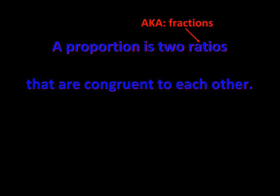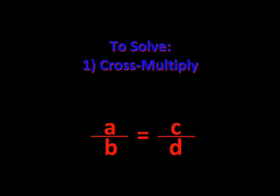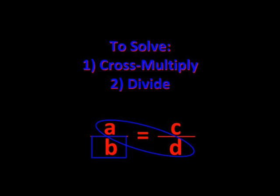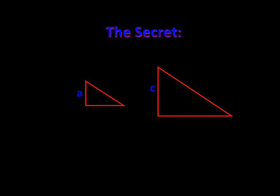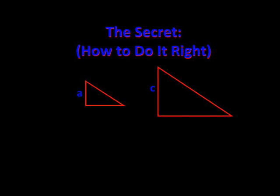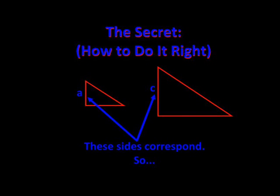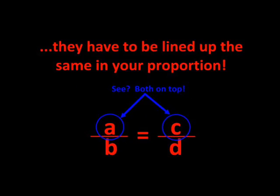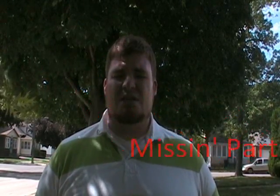Our proportion is two ratios that are congruent to each other. To solve, you just cross multiply and divide. The secret to how to do it right: make sure corresponding parts align, and then it's easy to find the missing parts.